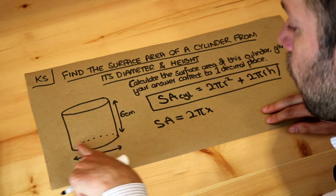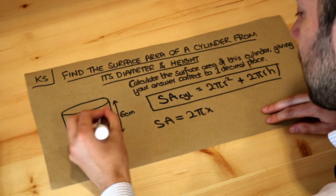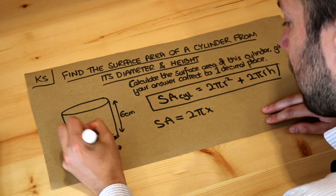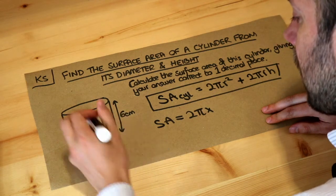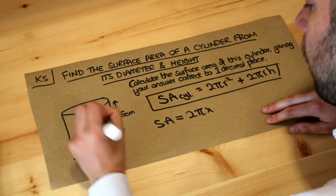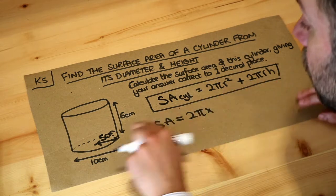Well, if the diameter, the full way across the circle, is 10 centimeters, then its radius, the distance just from the center of the circle to the circumference, is 5 centimeters, so half of 10. Make sure you use the radius, not the diameter. R stands for radius, not diameter.